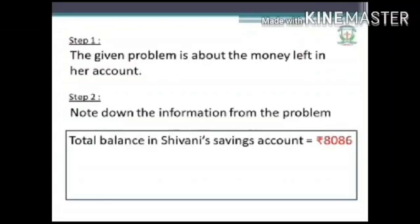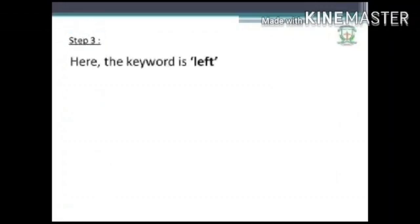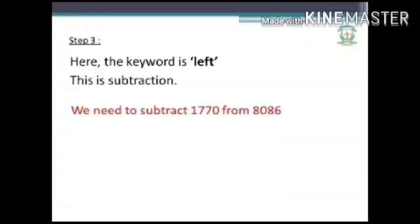Total balance in Shivani's savings account is rupees 8086. Amount withdrawn is rupees 1770. So we need to find out the amount left in her account. Step 3: The keyword is 'left' — this is subtraction. We need to subtract 1770 from 8086.